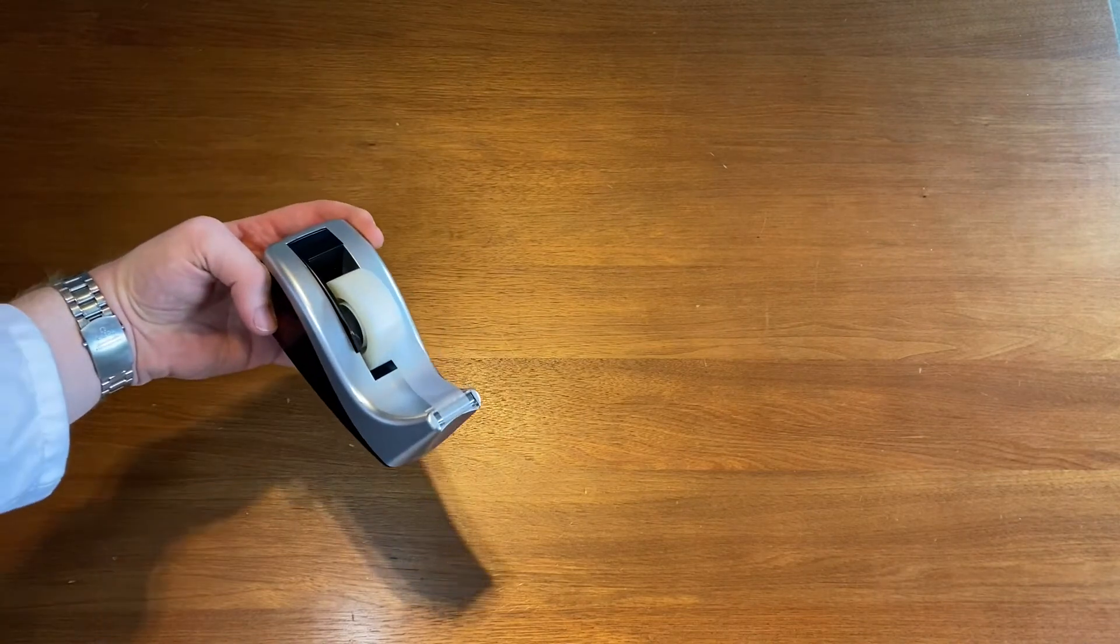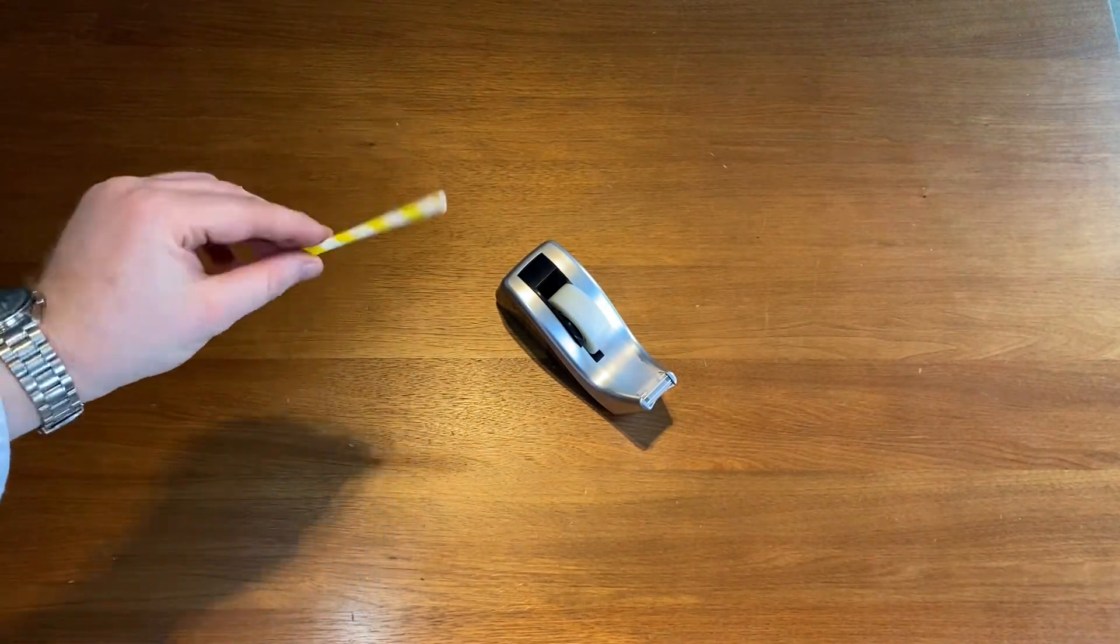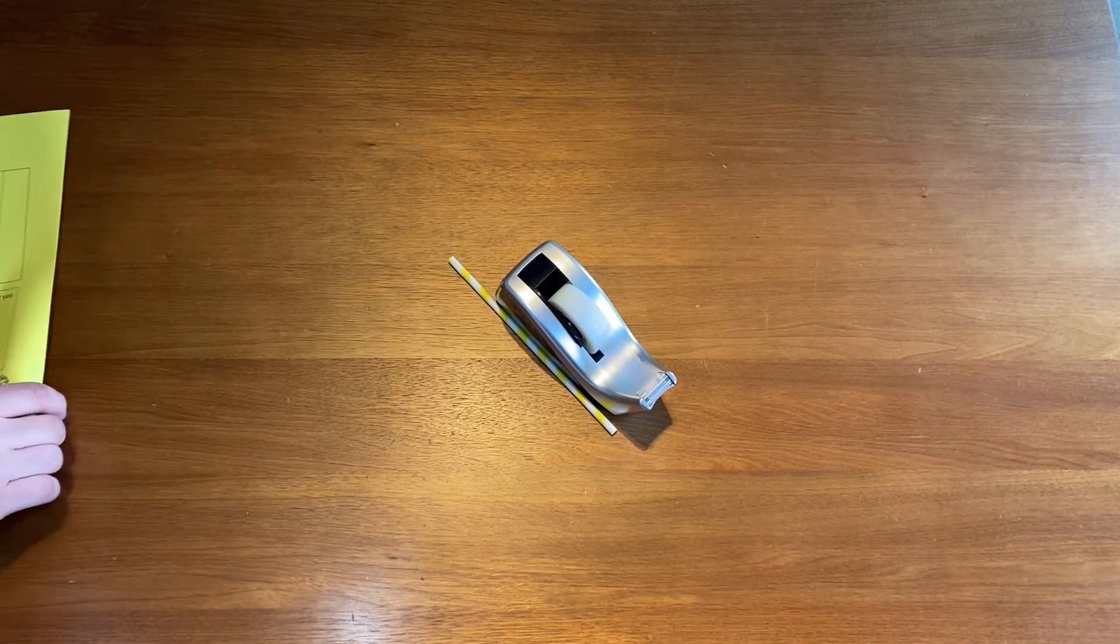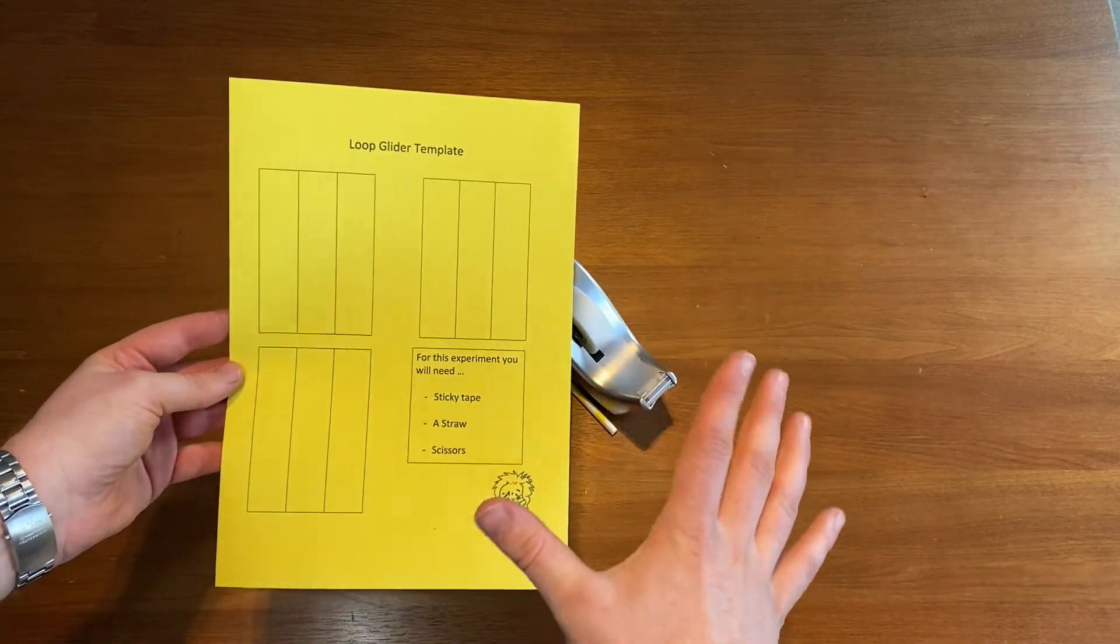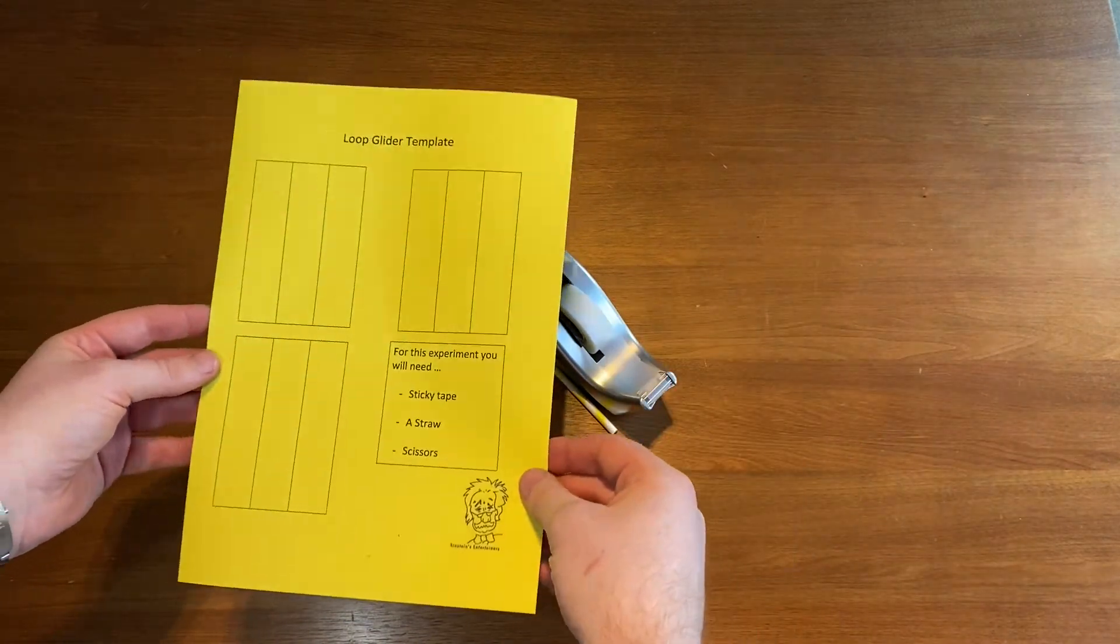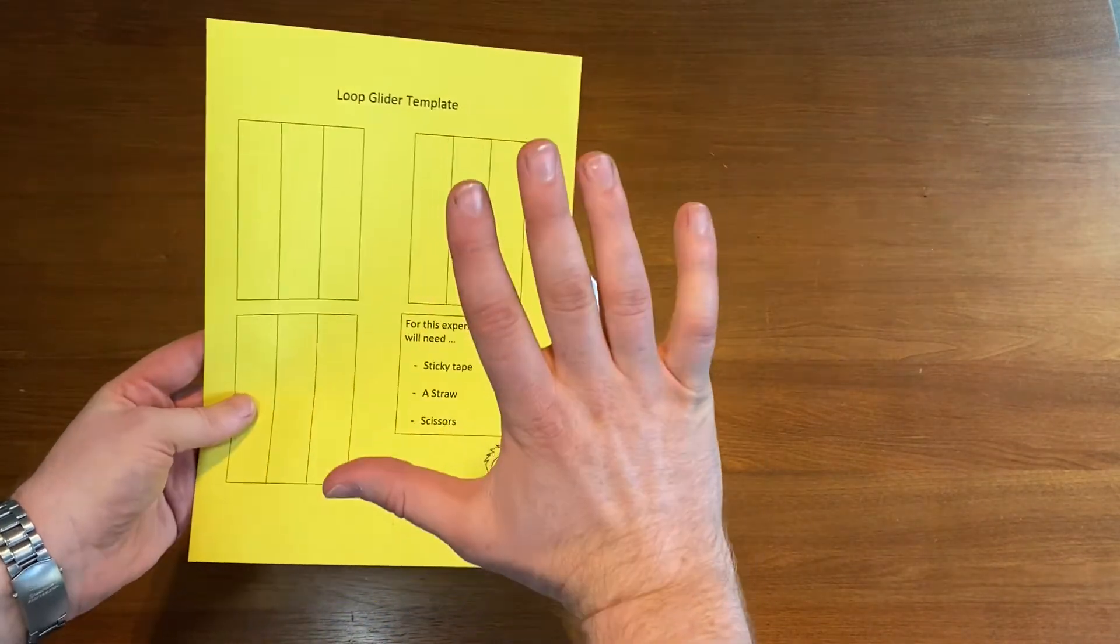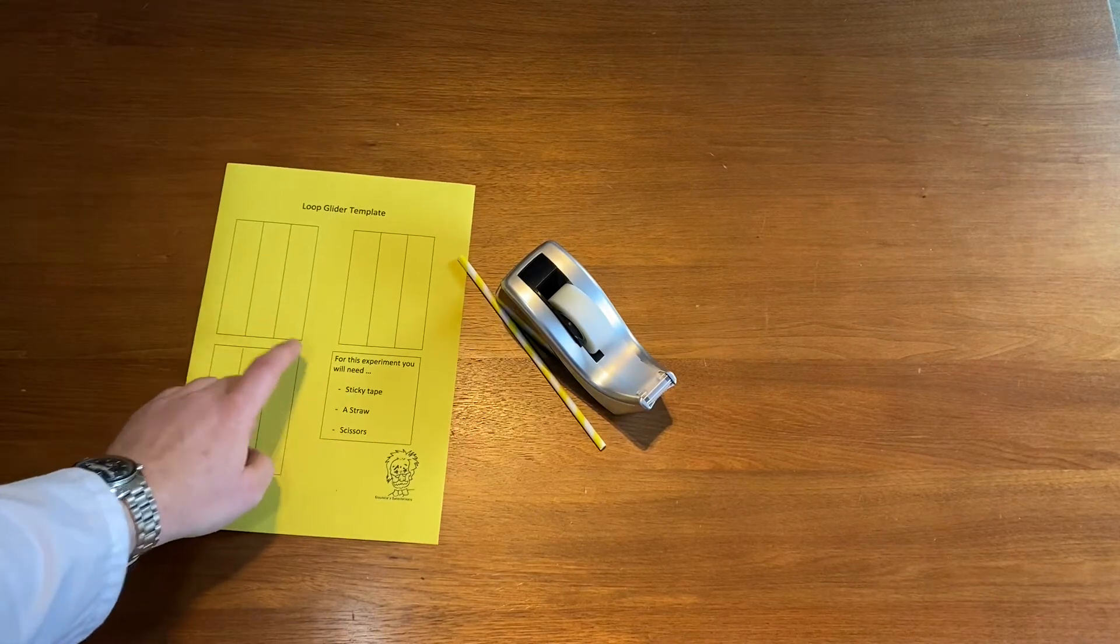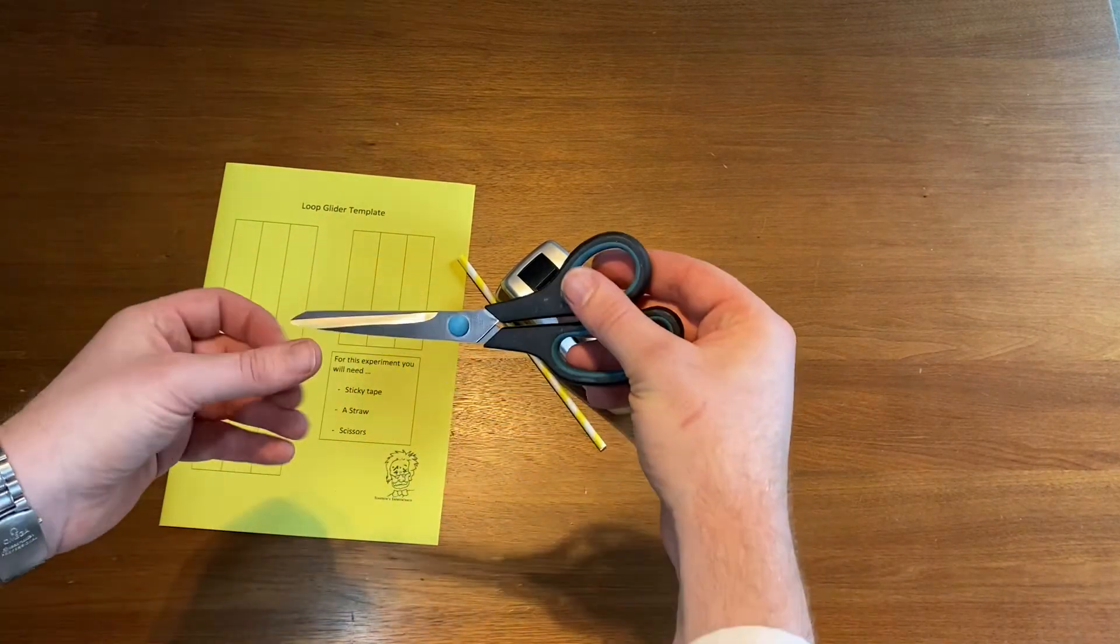For this experiment, you will need some sticky tape, a straw, our loop glider template from off our website. Now, with this template, it would be really good. It helps the experiment if you could print it out on card. So I've printed ours out on yellow card, and you can get this off our website. And you're also going to need a pair of scissors.